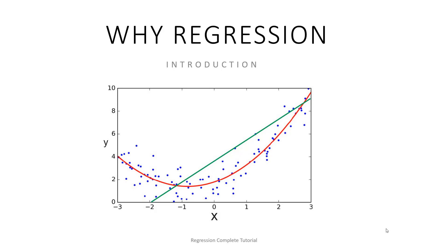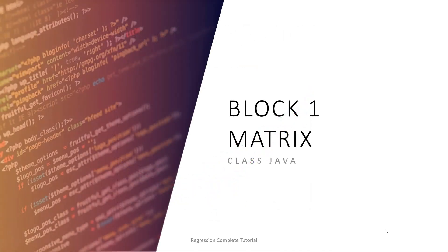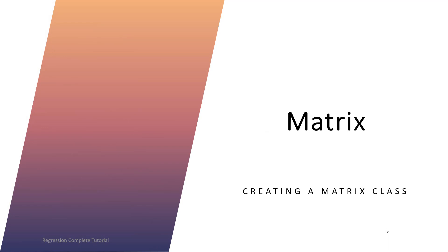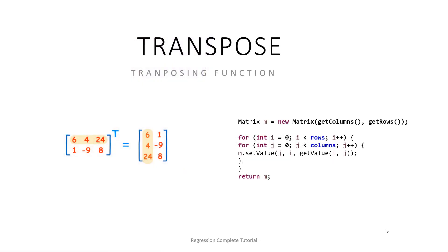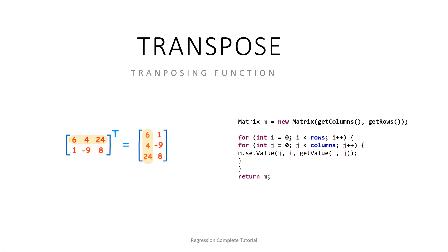We will create a Matrix class in Java, and this Matrix class will have some constructors and other functions. The first function is the transpose function. For example, here we have a matrix that has two rows and three columns, and we want to get the transpose. The transpose swaps the rows and columns — we put this row into a column and this row into the second column. In the Java code we will create a new matrix.